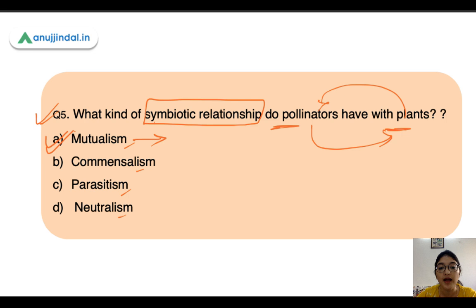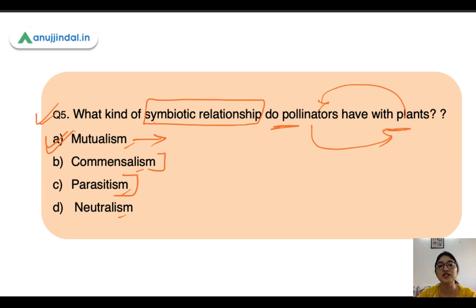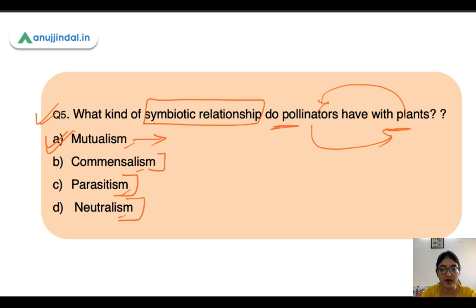In commensalism, when two species interact, one species gets benefit while the other is unaffected. In parasitism, one species gets benefit while the other gets harmed. In neutralism, there is no effect on either species.